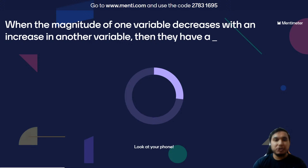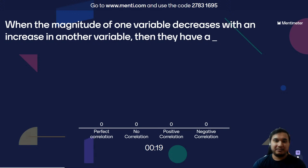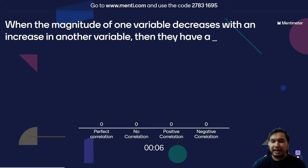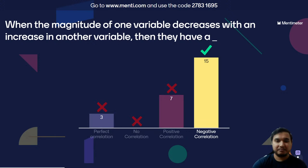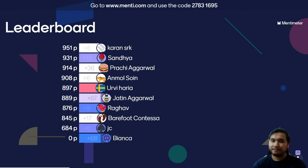Question number two: When the magnitude of one variable decreases with an increase in another variable, what kind of correlation do they have? Is it a perfect correlation, no correlation, positive correlation, or negative correlation? The correct answer is negative correlation. In statistics and data science, a negative correlation is a relationship between two variables in which one variable increases as the other decreases, and vice versa. For example, if the speed of a car increases, the time taken to reach the destination will decrease.